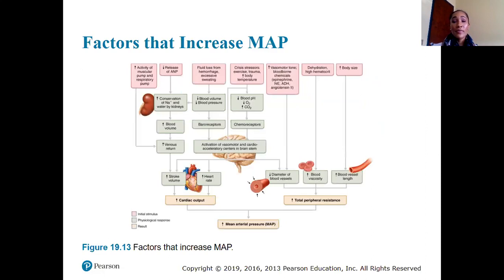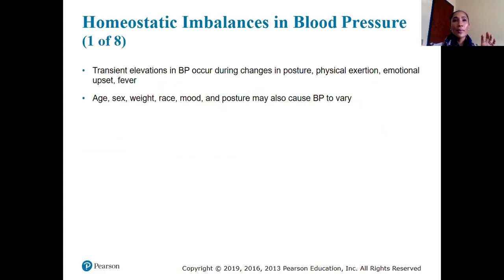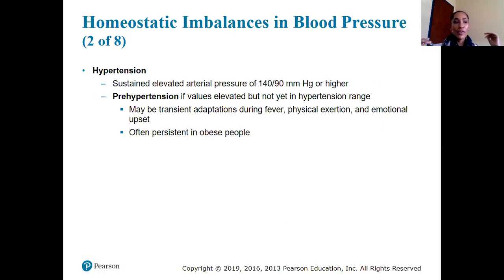Transient elevations in blood pressure can occur during changes in posture, physical exertion, emotional upset, or fever. Age, sex, weight, race, mood, and posture may also cause variation. Hypertension occurs when blood pressure is consistently at 140 over 90 or higher — not just temporarily elevated from anxiety, but sustained over an extended period regardless of situation.